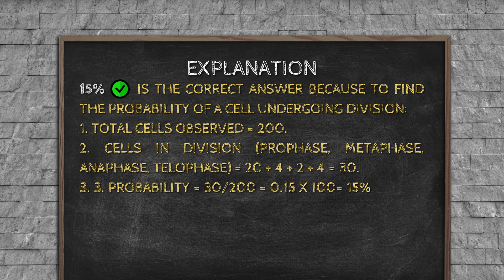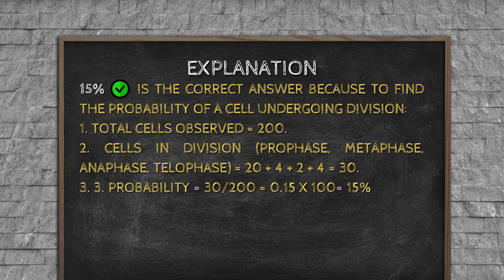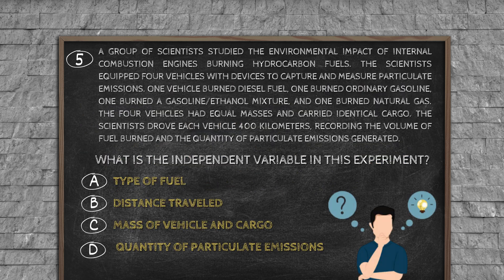Explanation: 15% is the correct answer because, to find the probability of a cell undergoing division: 1. Total cells observed equals 200. 2. Cells in division (prophase, metaphase, anaphase, telophase) equals 20 plus 4 plus 2 plus 4 equals 30. 3. Probability equals 30 by 200 equals 0.15. Multiplied by 100 equals 15%.